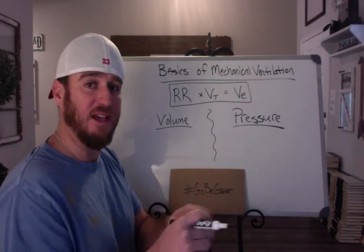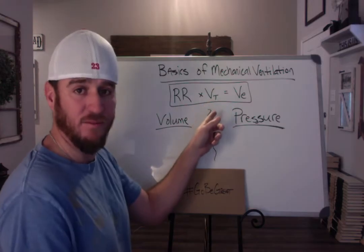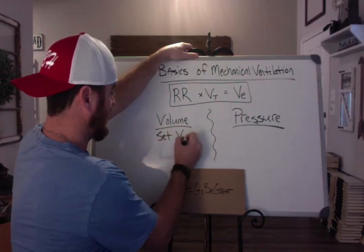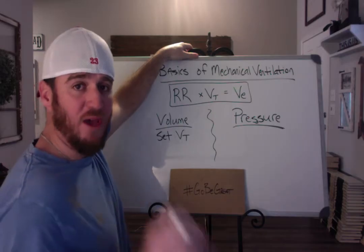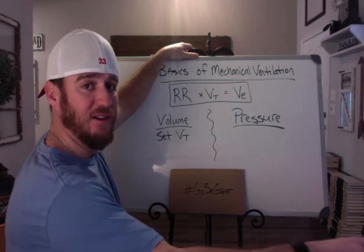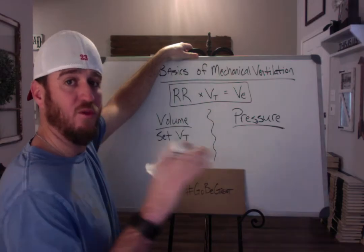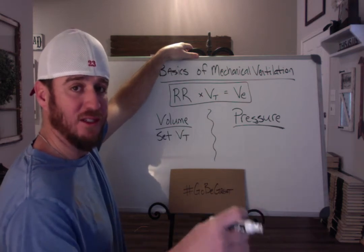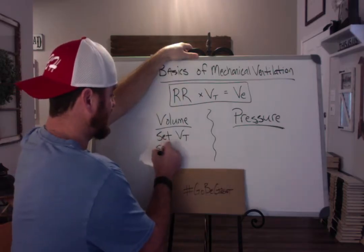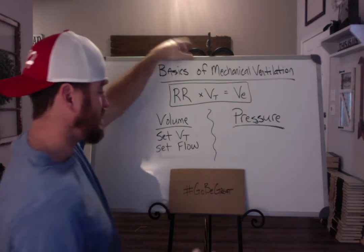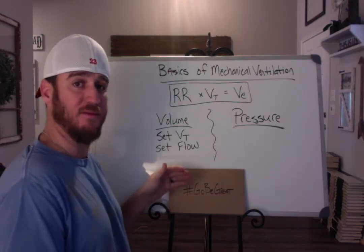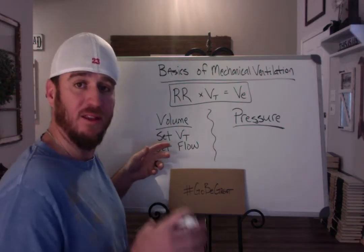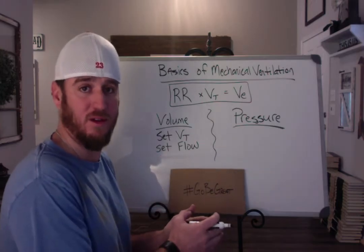What's going to matter is how you establish the tidal volume. Volume ventilation is pretty simple because you set that tidal volume, but you also have to tell the ventilator how fast to give that tidal volume — do you want it quick or slow? So you have to set the tidal volume and then you have to set flow. If you set a respiratory rate, a tidal volume, and a flow, you're going to ventilate your patient.